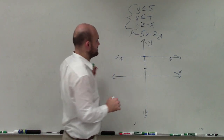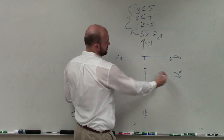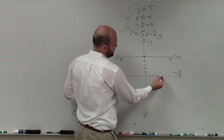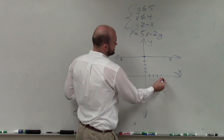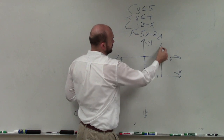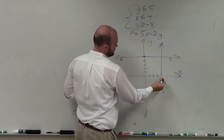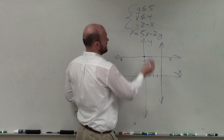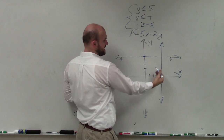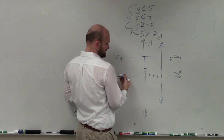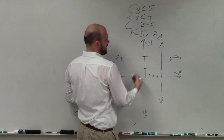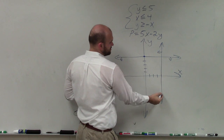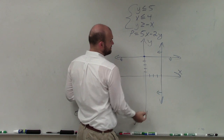The next thing is I go over to x equals 4. So on the x-axis I go over 1, 2, 3, 4 — that's going to be a nice vertical line. And since this says x is less than 4, the values that are less than 4 on the x-axis are going to be going to the left.